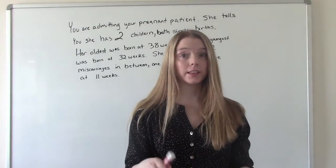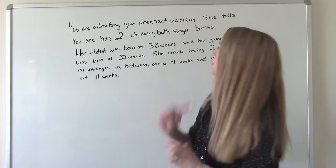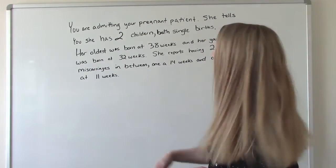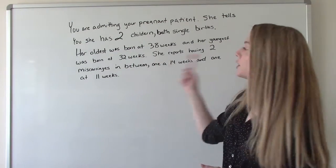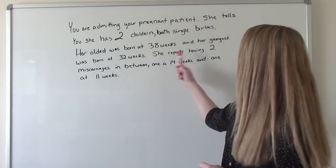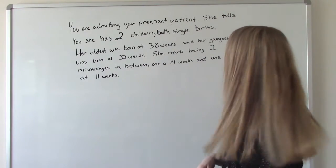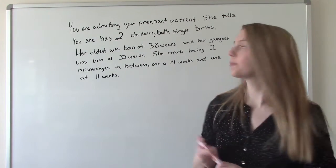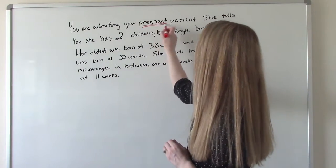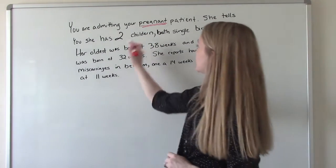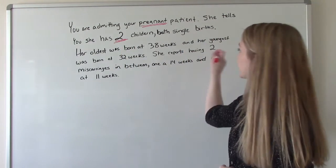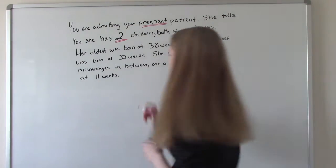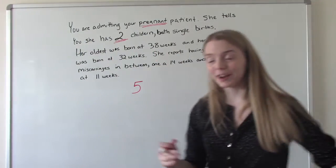All right, now let's try one that's a little bit more complicated. So let's do another one. This one's a little bit more challenging than the first one. So we're admitting our pregnant patient. She tells us she has two kids. Both are single births. Her oldest was born at 38 weeks and her youngest was born at 32 weeks. She reports having two miscarriages in between those two deliveries. One was at 14 weeks and one was at 11 weeks. So what is her GTPAL?